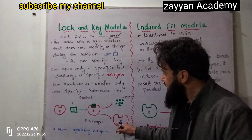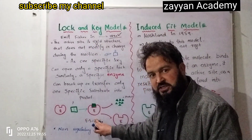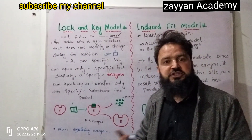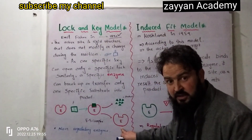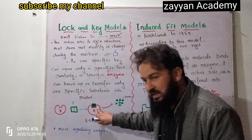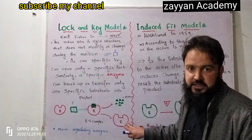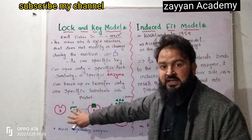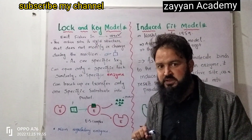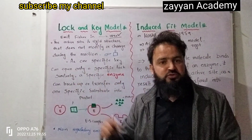Now the question is: before the reaction, during the reaction, and after the reaction, does the enzyme shape change? In the Lock and Key Model, the active site shape does not change. The active site shape remains the same before, during, and after the reaction. This is the key model, which is based on high specificity.